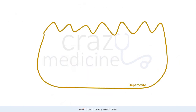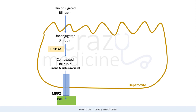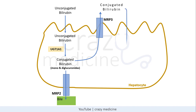Consider this as a hepatocyte. Unconjugated bilirubin enters the hepatocyte by diffusion. This unconjugated bilirubin is conjugated with glucuronic acid with the help of enzyme UGT1A1, which is Uridine Diphosphate Glucuronosyltransferase 1A1. Bilirubin is conjugated in the form of mono and diglucuronides. This conjugated bilirubin is transported to bile via the MRP2 channel, and is subject to reuptake by the hepatocyte via OATP1B1 and OATP1B3 channels — OATP meaning Organic Anion Transport Protein.